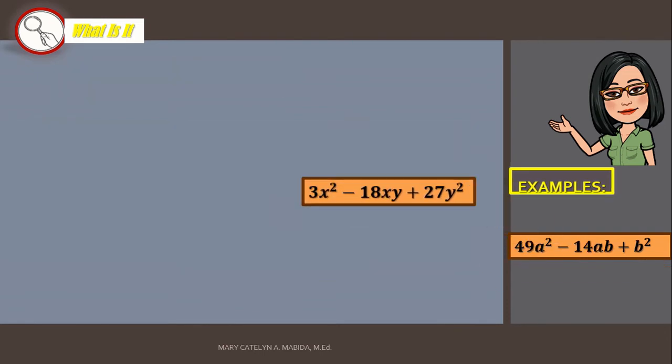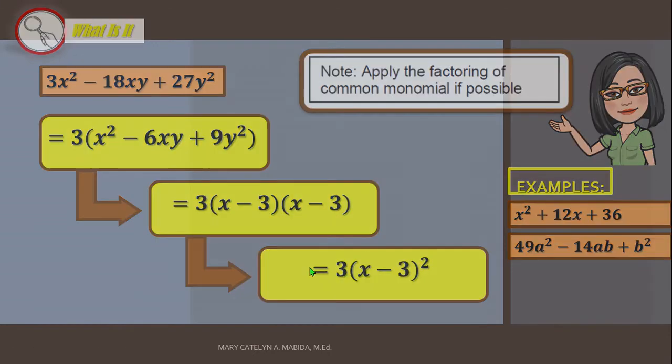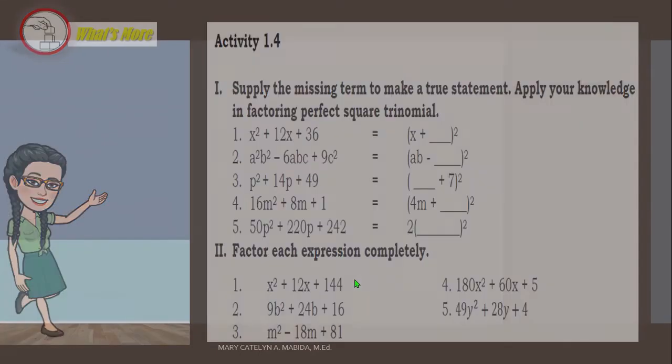Now, let's go to example number 3. Note that, if it is possible, please apply factoring of common monomials. So, let's have 3x squared minus 18xy plus 27y squared. And their common monomial factor is? That is right! It is 3. So, 3 times the quantity of x squared minus 6xy plus 9y squared. And then, we are going to get the square root of the first and the last term, which are x and 3y respectively. And then, again, since this is a subtraction, and so, your square of a binomial should also be a subtraction.